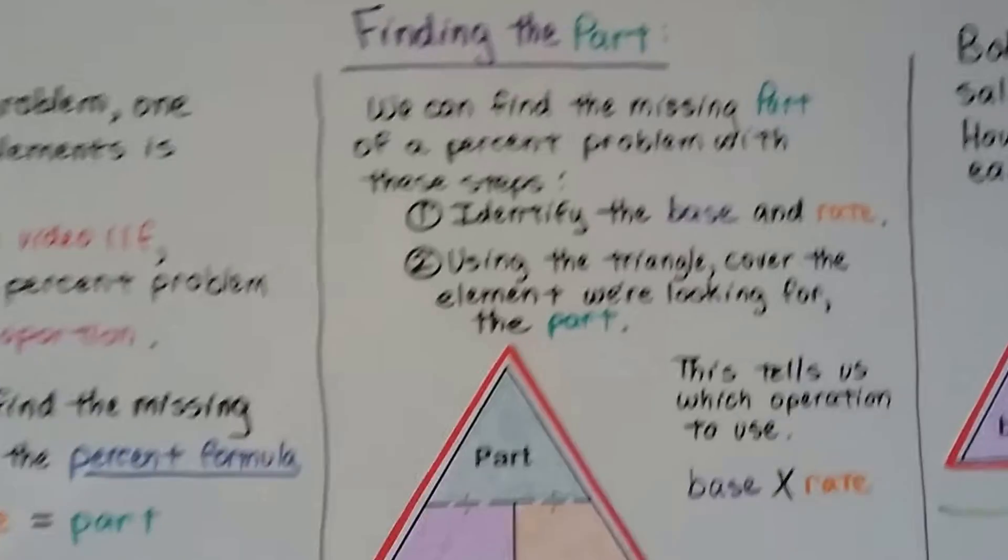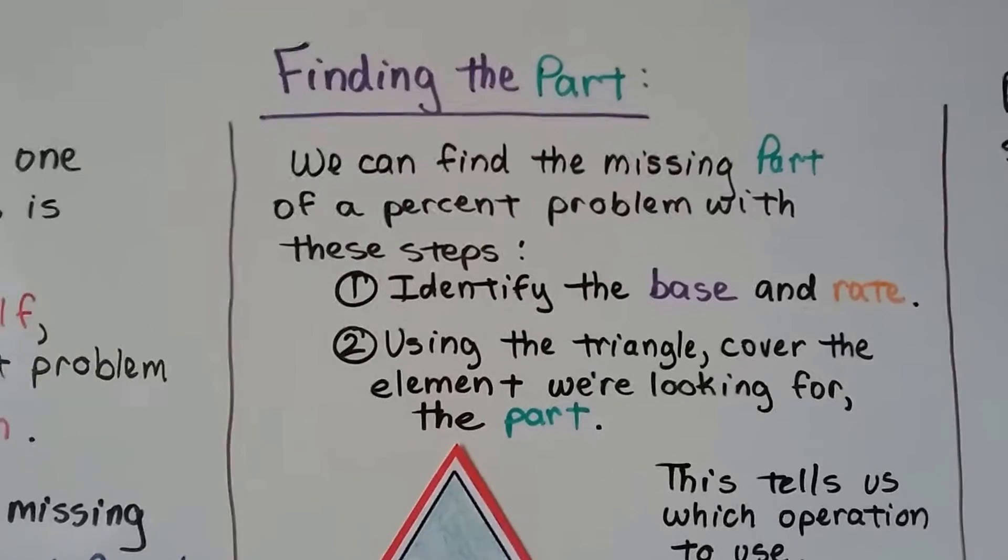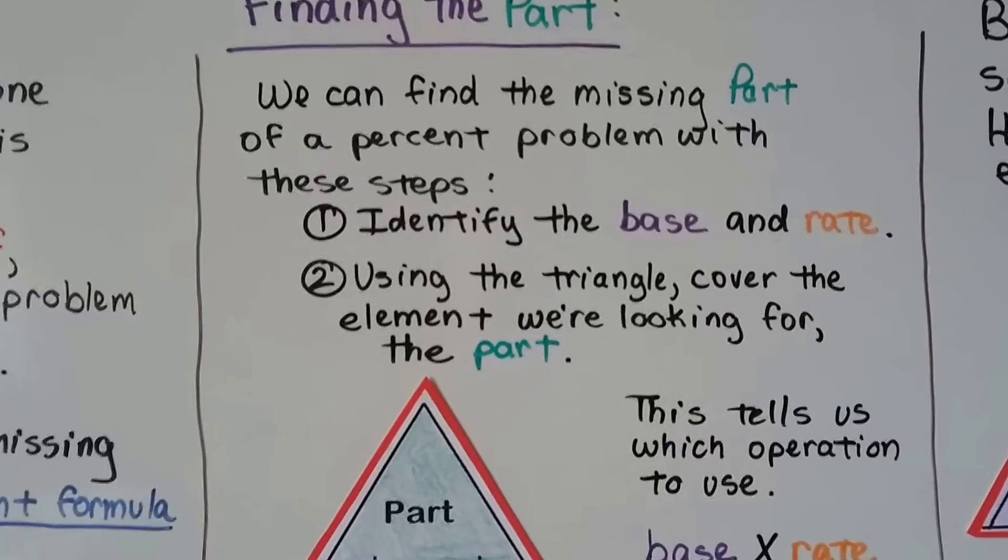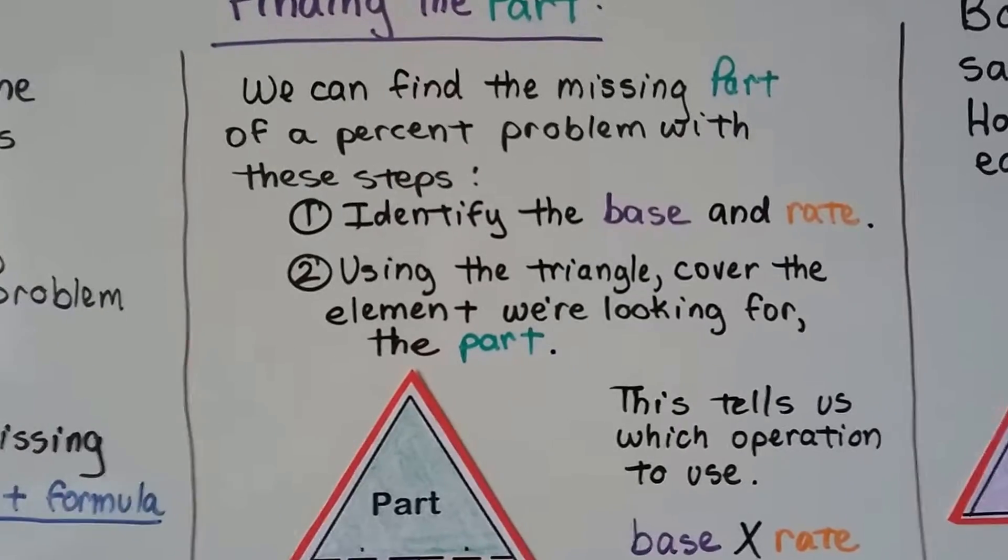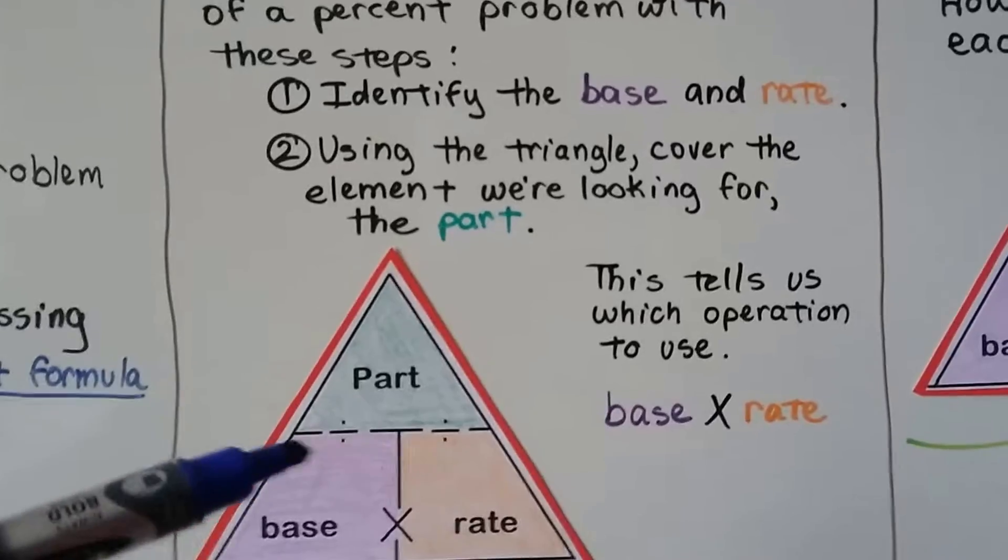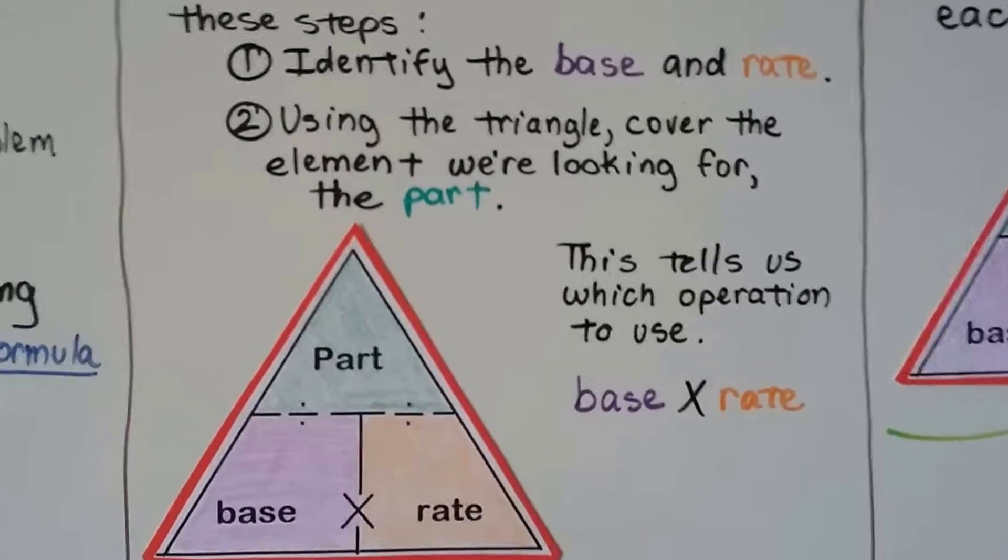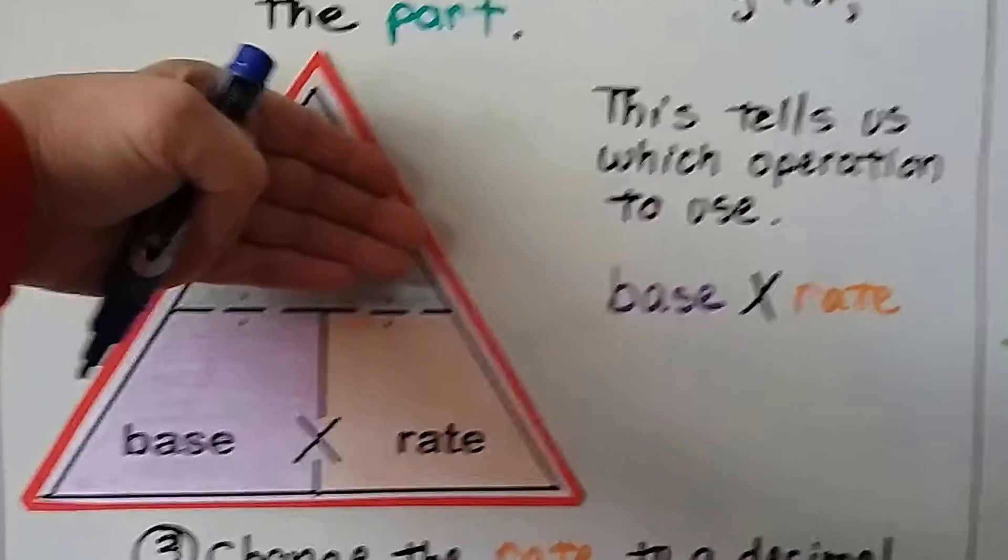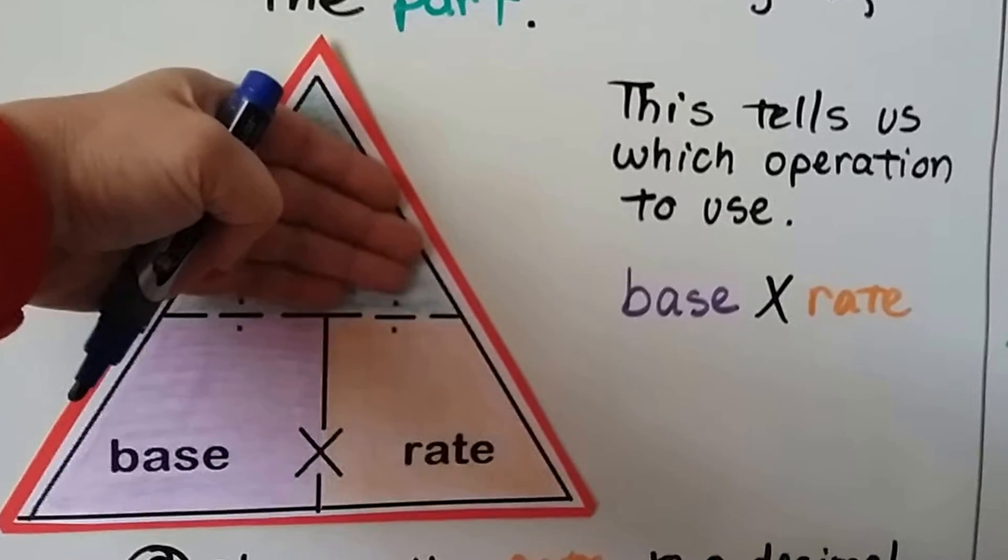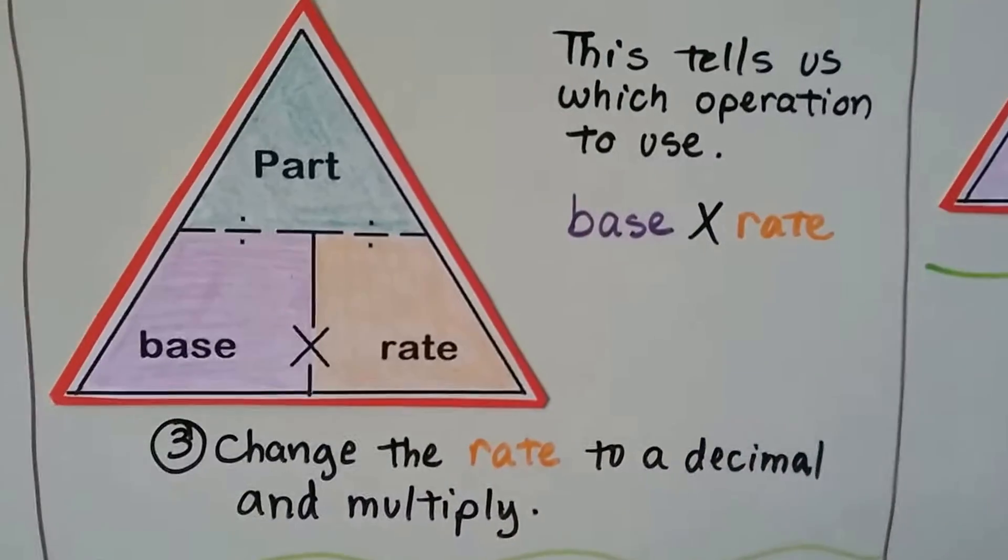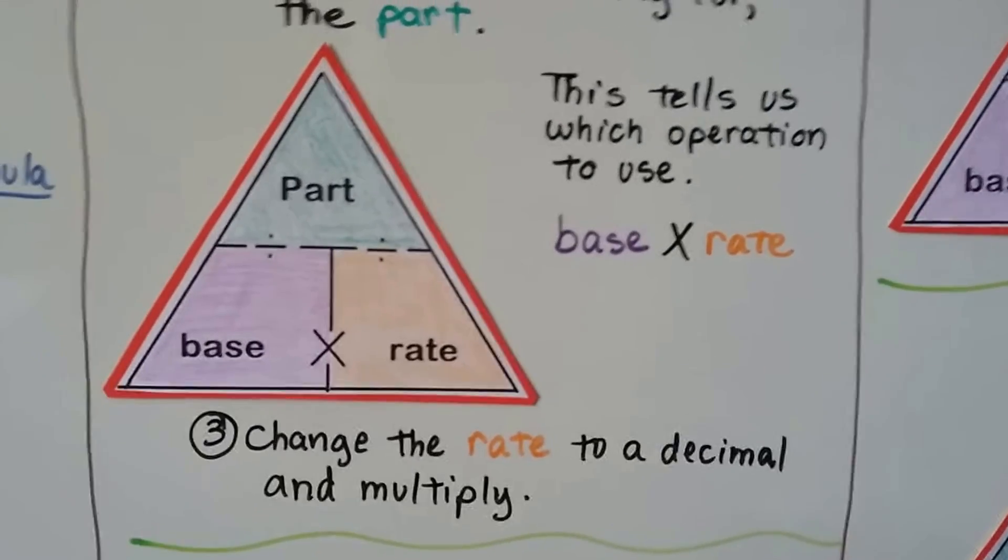So let's find the part. We can find a missing part of a percent problem with these steps. We identify the base and the rate. We figure out what they are, and using the triangle, we cover the element we're looking for. So if we're looking for the part, we cover it, and it tells us which operation to use, the base times the rate. We change the rate to a decimal and just multiply it to the base.